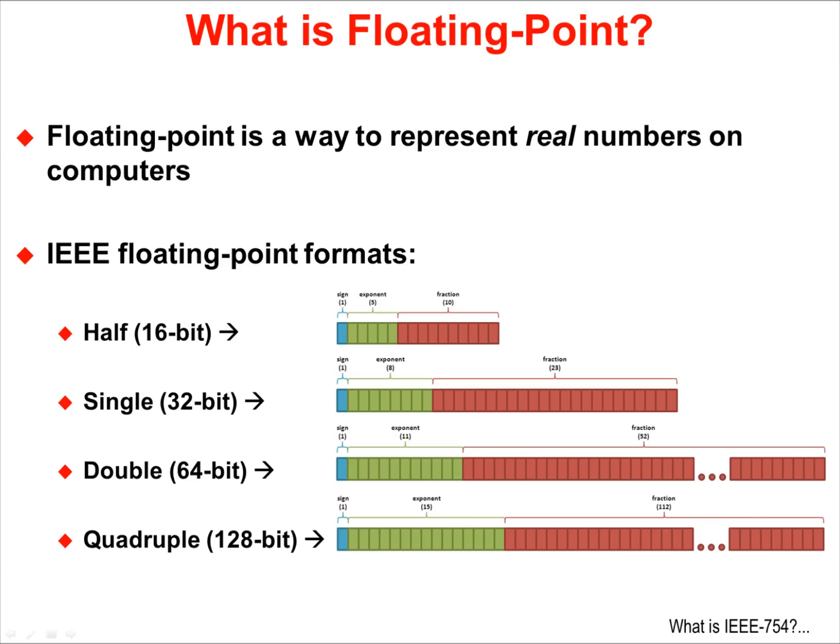Floating point is a way to represent real numbers on computers. There are several IEEE floating point formats: half precision at 16 bits, single precision at 32 bits, double precision at 64 bits, and quadruple at 128 bits. IEEE 754 is single precision and the format used on the Tiva C-series devices.